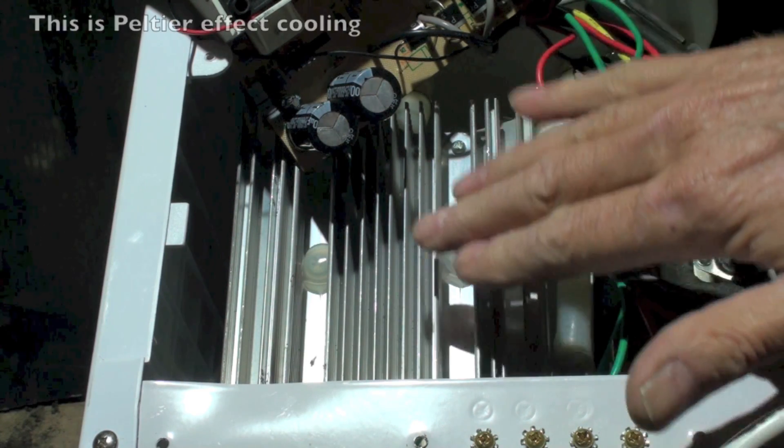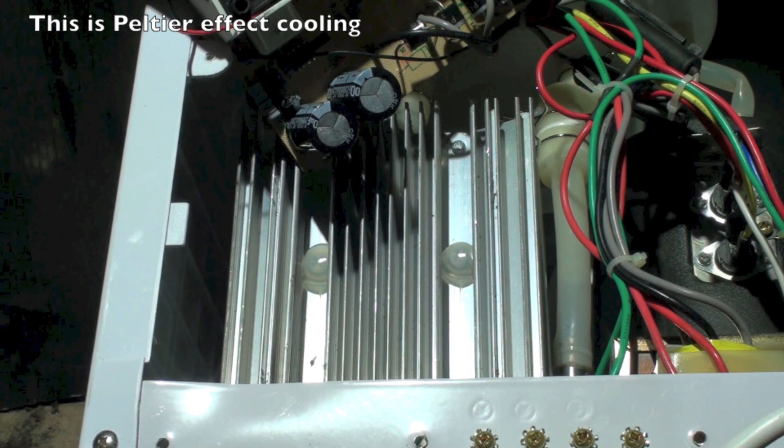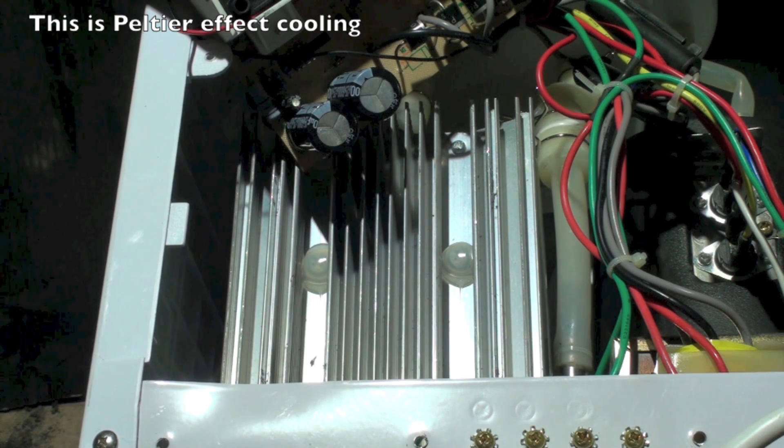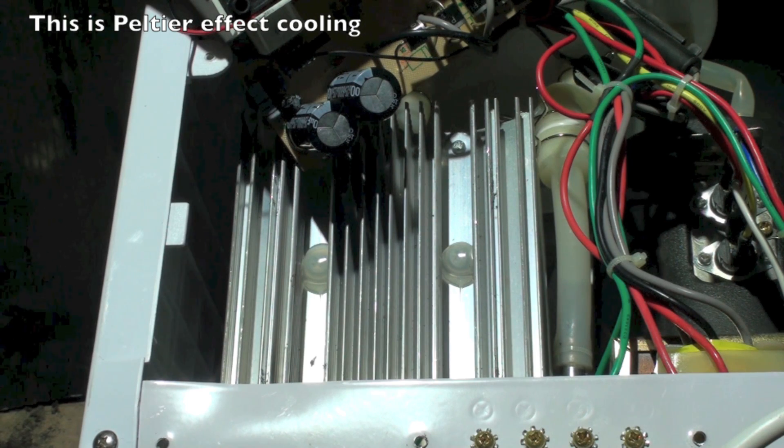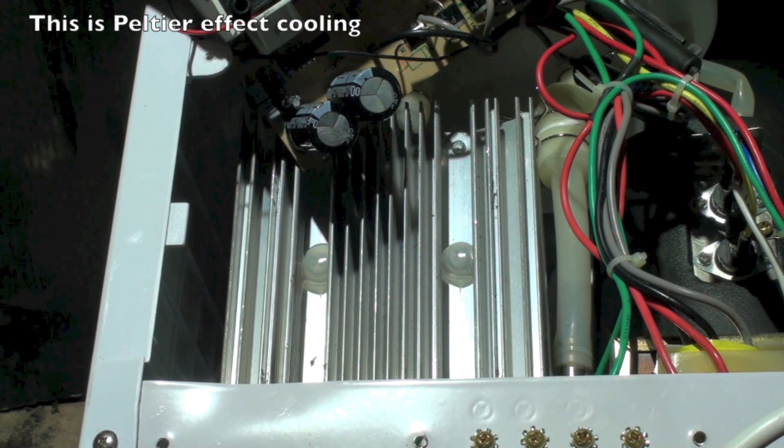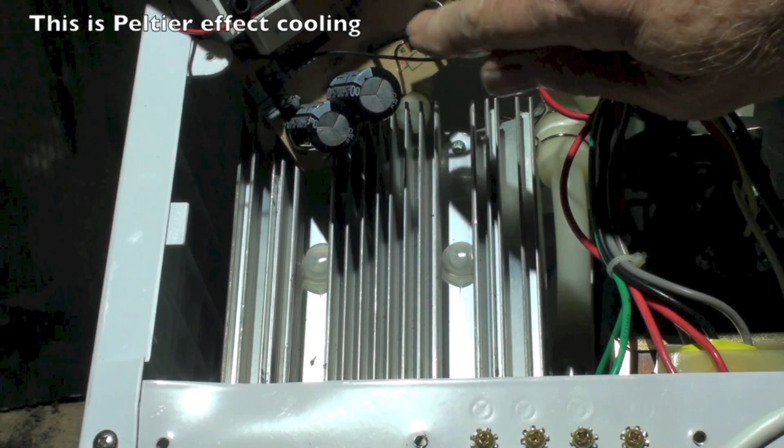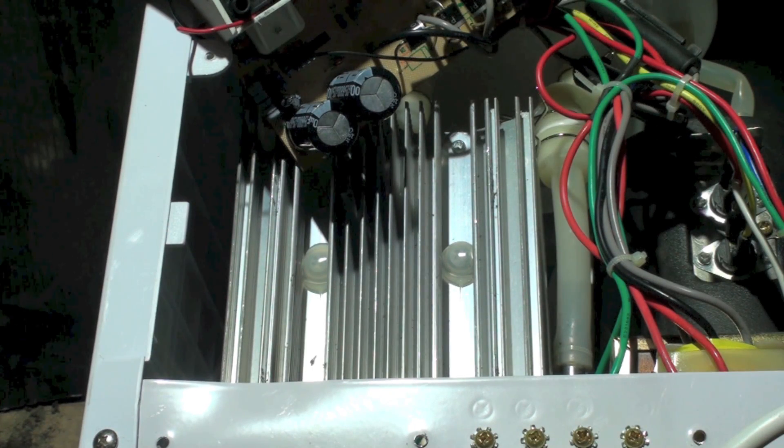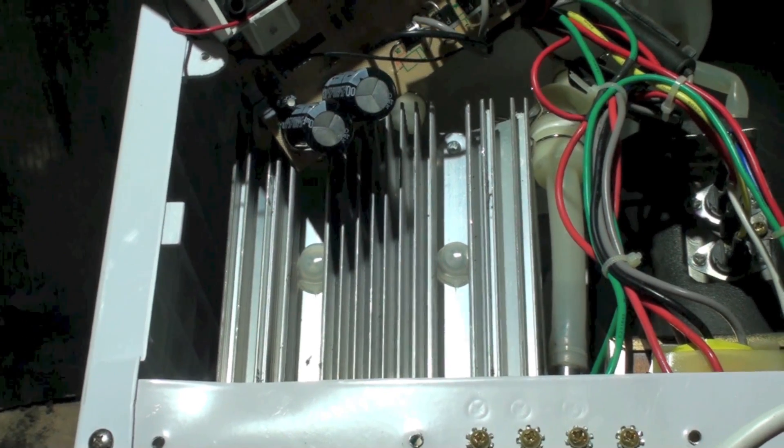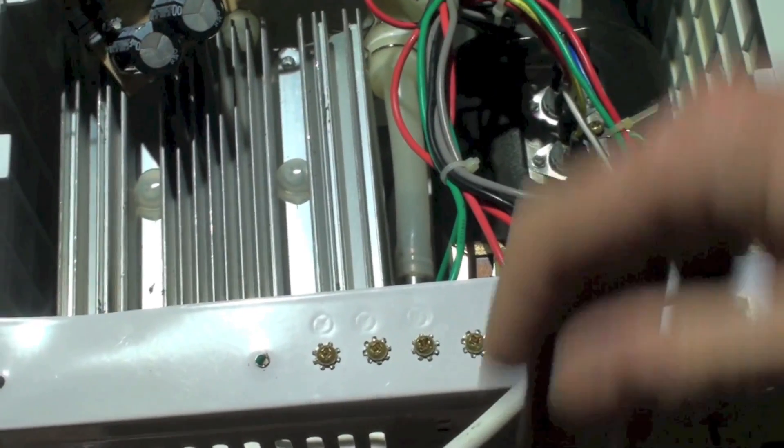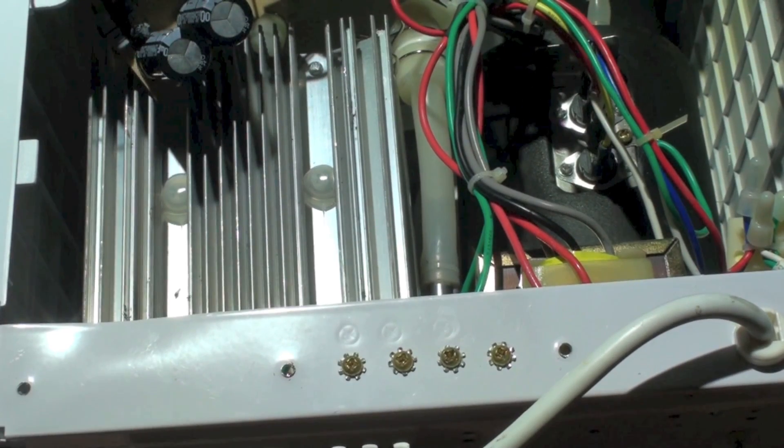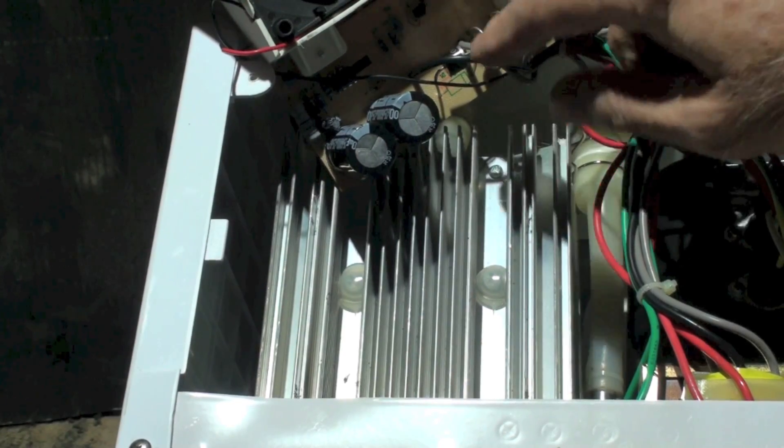It's called thermoelectric cooling. It uses a semiconductor. If I put electricity, DC only, it works DC, and that's the reason for these diodes here - to take the transformer, which is right there, just barely see the top of the transformer. It's a 12-volt transformer, then it's turned to DC.